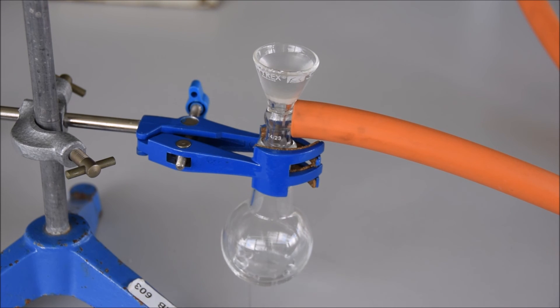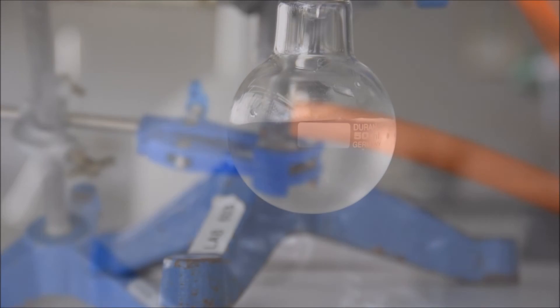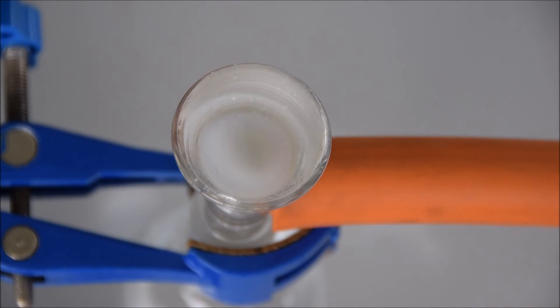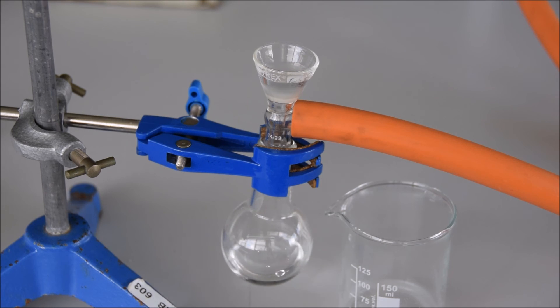Here just for demonstration purposes I show you how slow a fritted funnel is, because that is their other disadvantage. Typically glass frits like the one shown are much slower compared to either Buchner funnels or regular filtration. That is offset against the advantage that they give you much finer filtration, and that's often the trade-off.